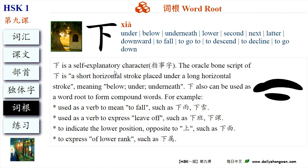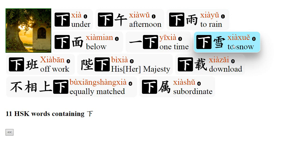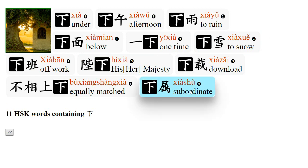下 is a self-explanatory character. The Oracle Bone script of 下 is a short horizontal stroke placed under a long horizontal stroke, meaning below, under, beneath. There are 11 HSK words containing 下. 下 can be used as a verb to mean 'to fall,' for example 下雨, 下雪. To express 'leave off': 下班. To express lower rank: 下属.